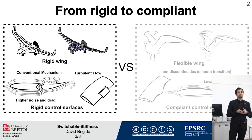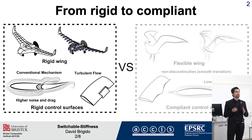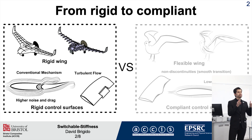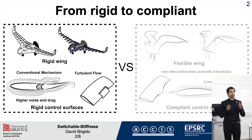Most aircraft wings have discrete control surfaces. This type of control surface has a gap, or a discontinuity, that causes a premature detachment of the boundary layer, leading to an increase of drag and noise.